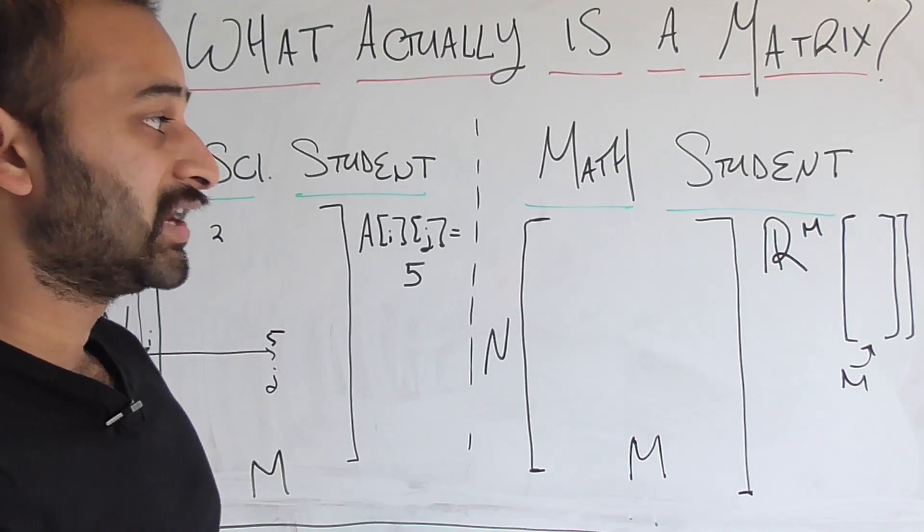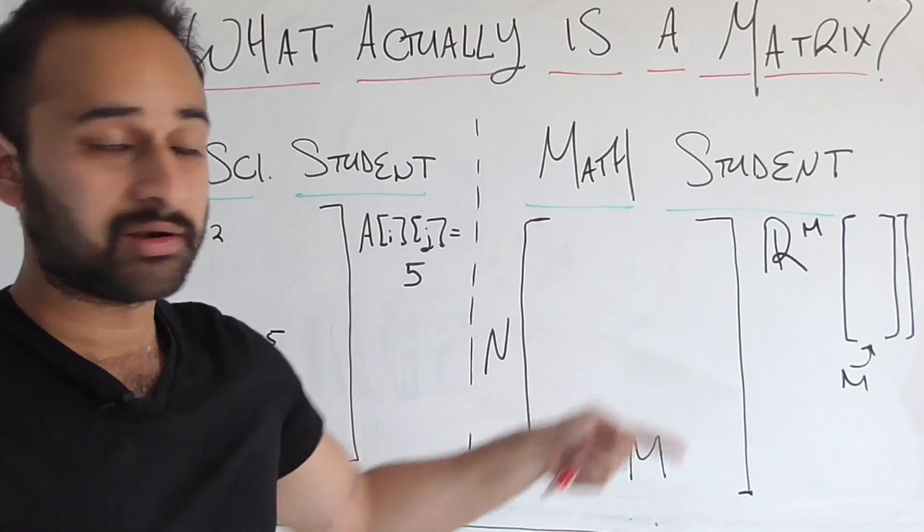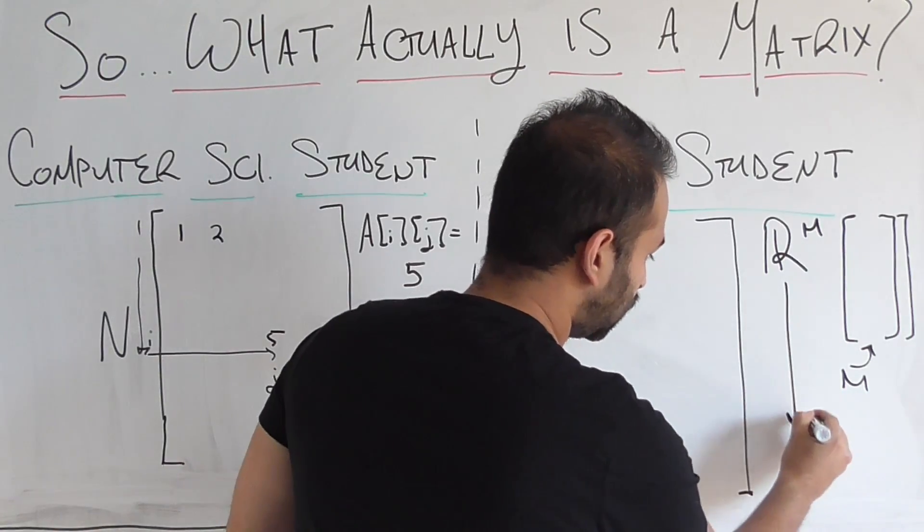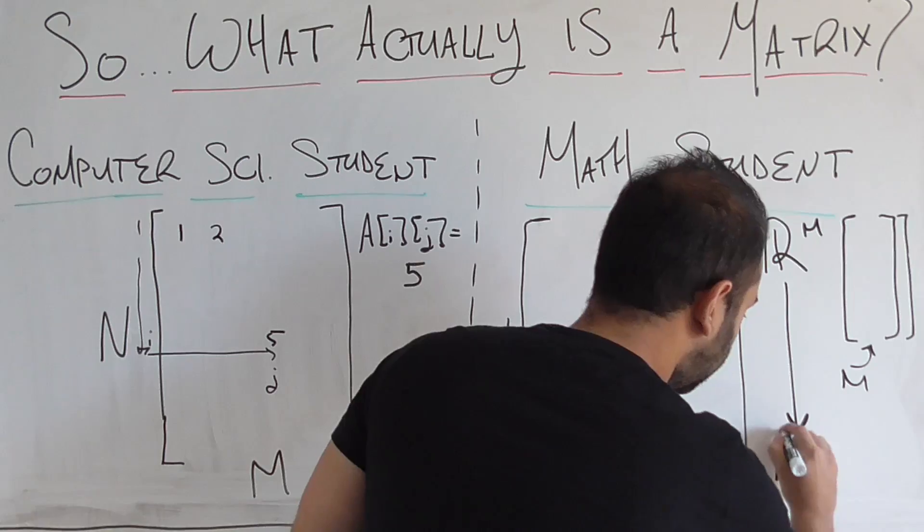that has m different numbers in it, and map it to a different vector, which lives in a completely different dimensional space, which is R^n.